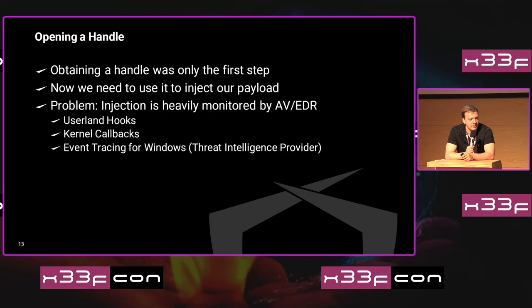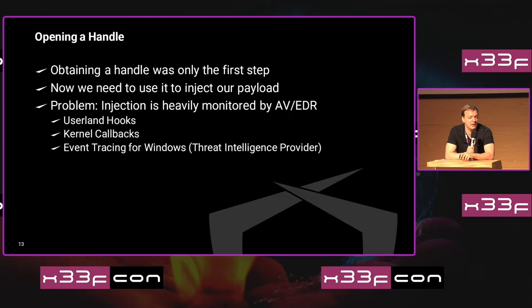Obtaining a handle was only the first step. The real problem is now using the handle to inject the payload into another process. There are a bunch of security techniques trying to make your life more difficult — for example, userland hooks, even more kernel callbacks, and event tracing for Windows. Let's first talk about userland hooks and system calls.